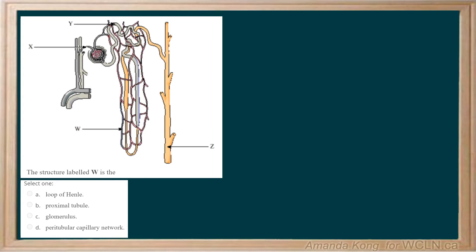The structure labeled Y is the: A, loop of Henle; B, proximal tubule; C, glomerulus; D, peritubular capillary network.